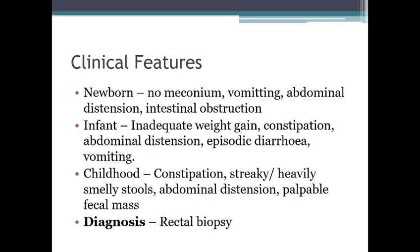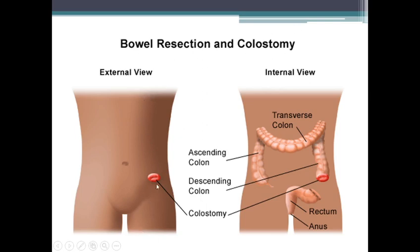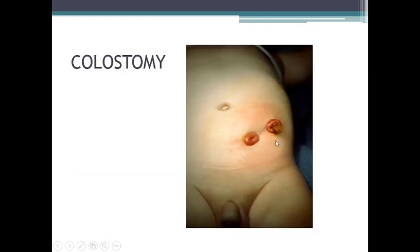Diagnosis is by rectal biopsy. Treatment is surgical: the first stage involves a colostomy, and the second stage is a pull-through surgery performed once the child reaches adequate weight. Nursing interventions focus on nutrition, home care education for patients and parents about colostomy care — how to handle the colostomy bag, skin care, bag changing, and stump cleaning. Parents must be aware of how to care for and clean the colostomy properly.